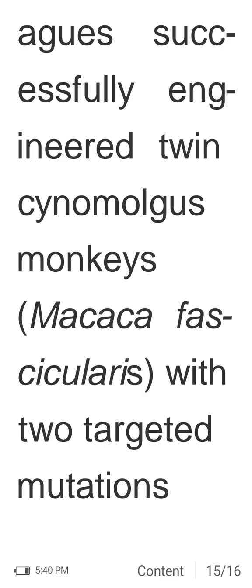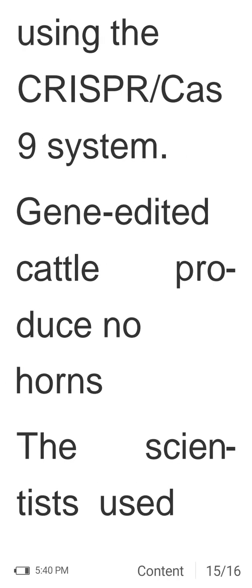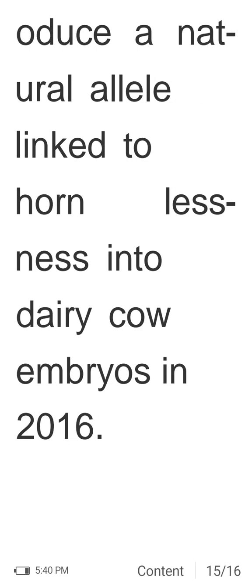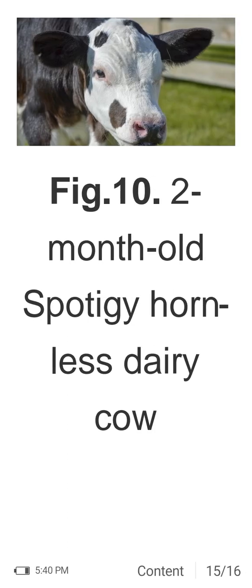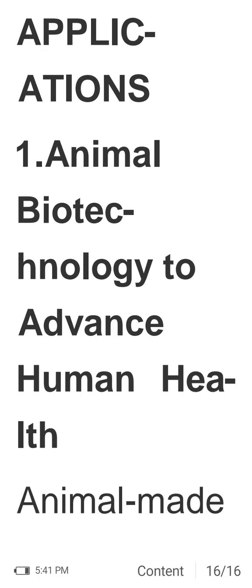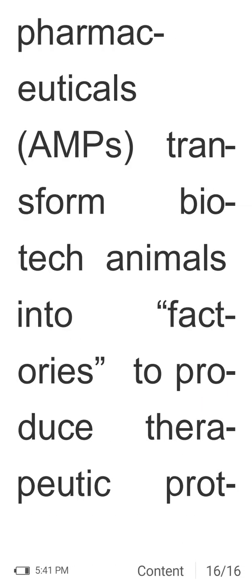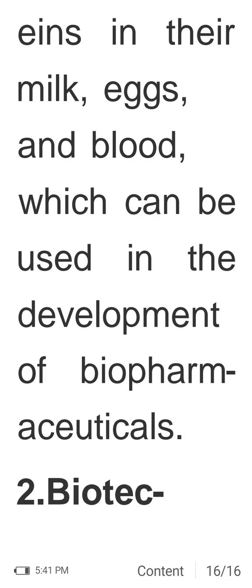In cynomolgous monkeys, two target mutations were introduced using the CRISPR-Cas9 system. Applications of animal biotechnology to advance human health include transforming biotech animals into factories to produce therapeutic proteins in their milk, eggs, and blood, which can be used in the development of biopharmaceuticals.